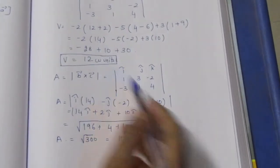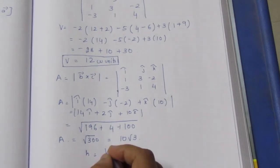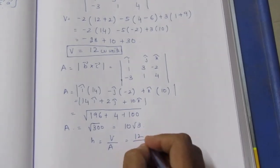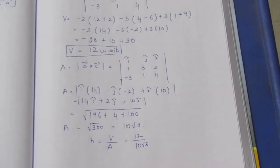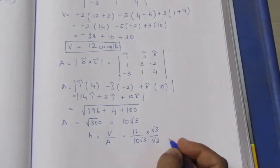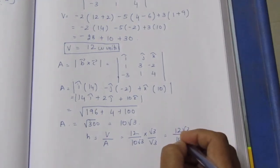Now finding height: h = volume/area = 12/(10√3). Rationalizing by multiplying by √3/√3: 12√3/(10×3) = 12√3/30.